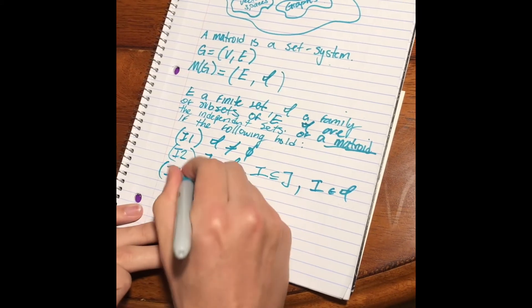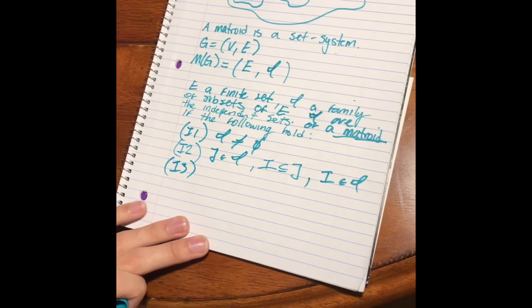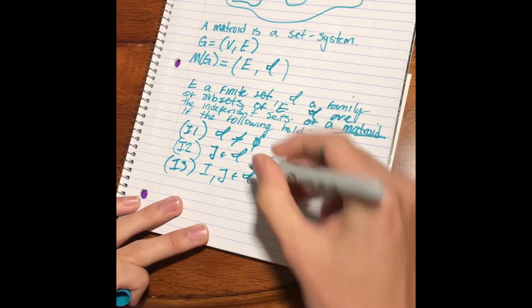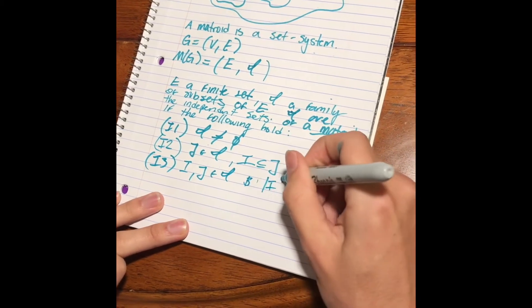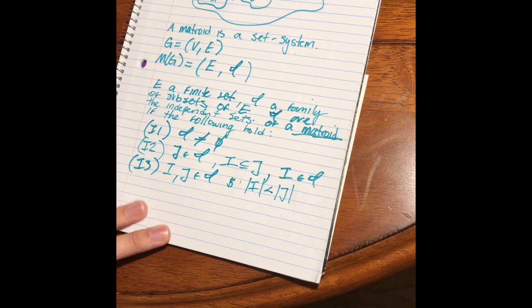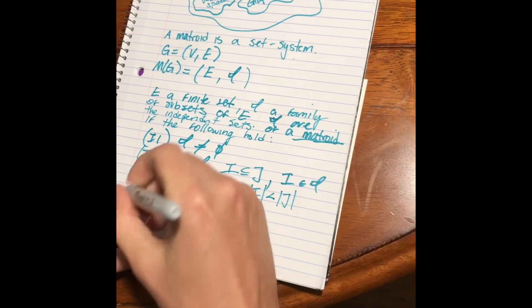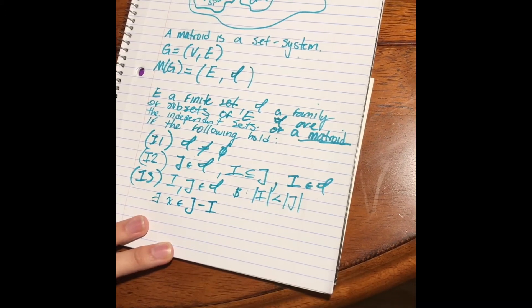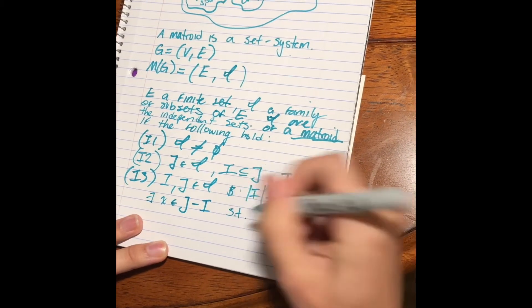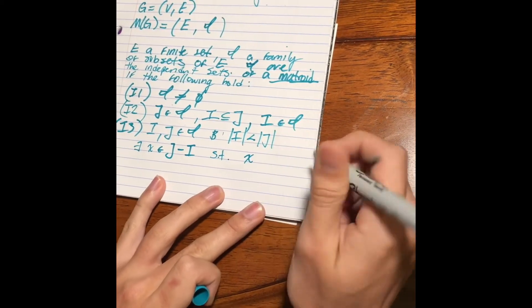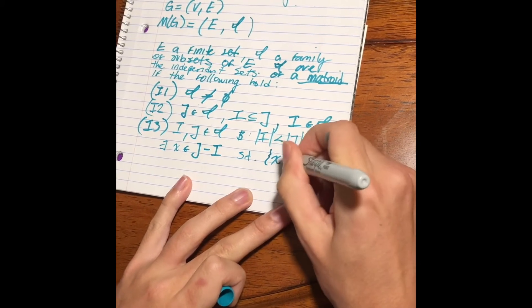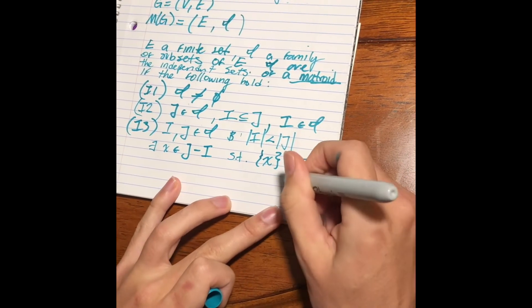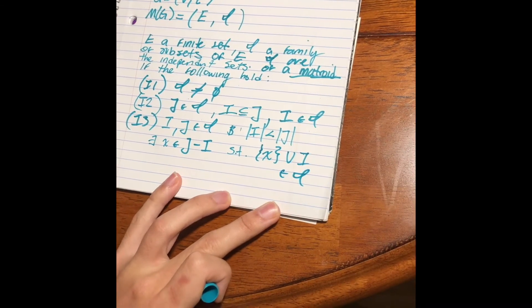The third axiom may seem a little convoluted, but it really isn't that difficult, and it says if we have two independent sets in our family and J is larger than I, then there exists an element that's in J but not I, such that that element, X, can be added into our smaller independent set I, and that new set is also in our family.